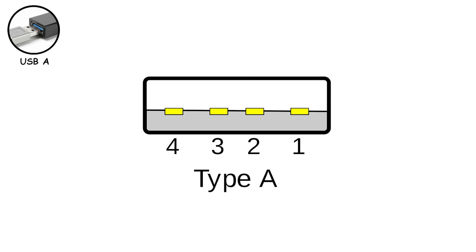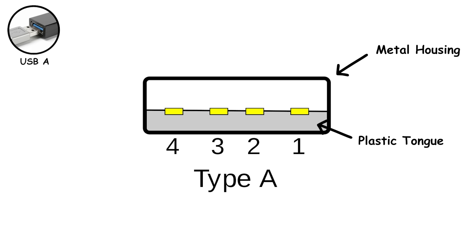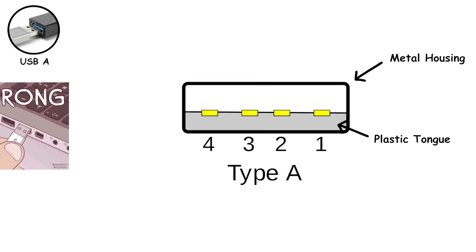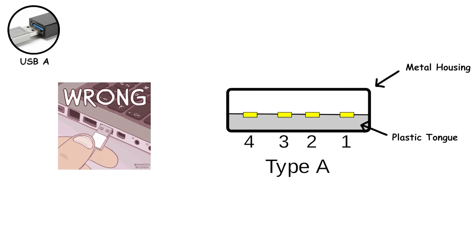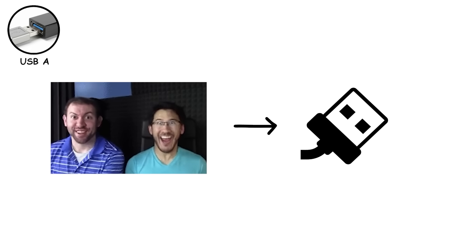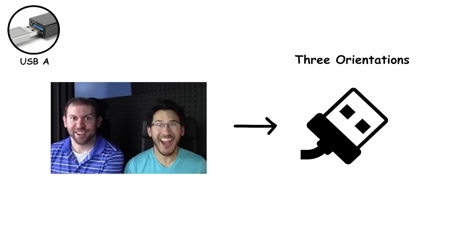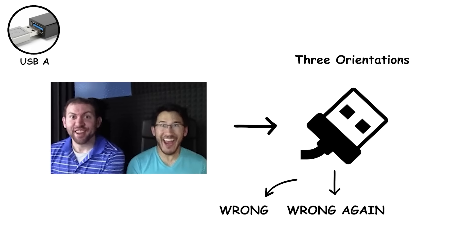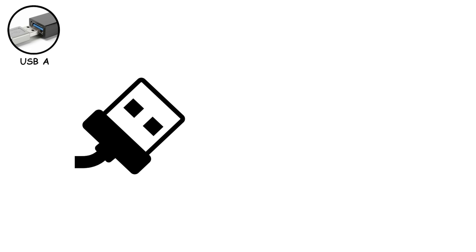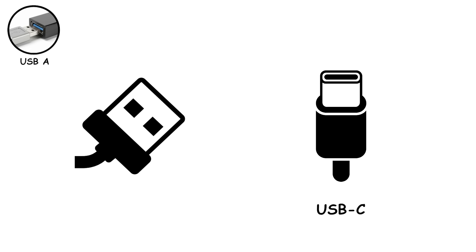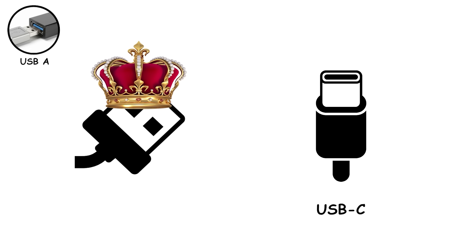The design of USB-A is pretty wide and flat, with a metal housing and a plastic tongue inside. It's almost impossible to plug it in correctly the first time. People joke that USB-A has three orientations: wrong, wrong again, and then finally right. Even though it's not reversible like USB-C, it remained the standard for years because manufacturers trusted it, people understood it, and it worked reliably.